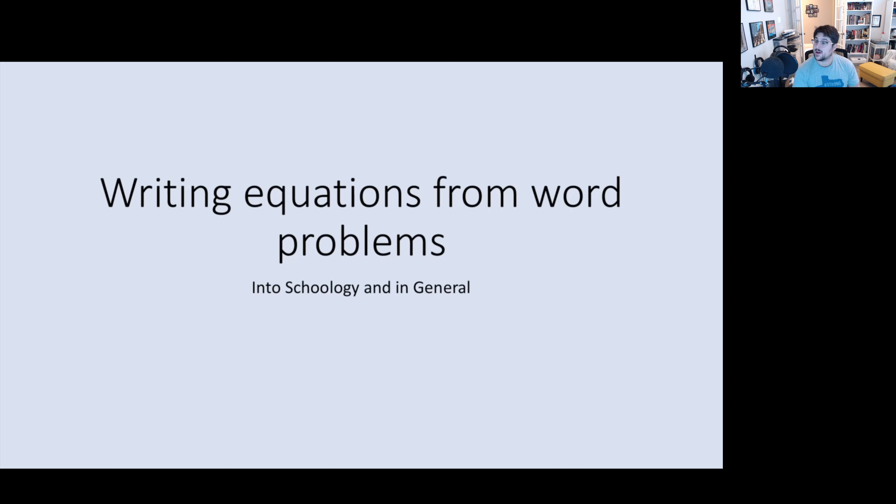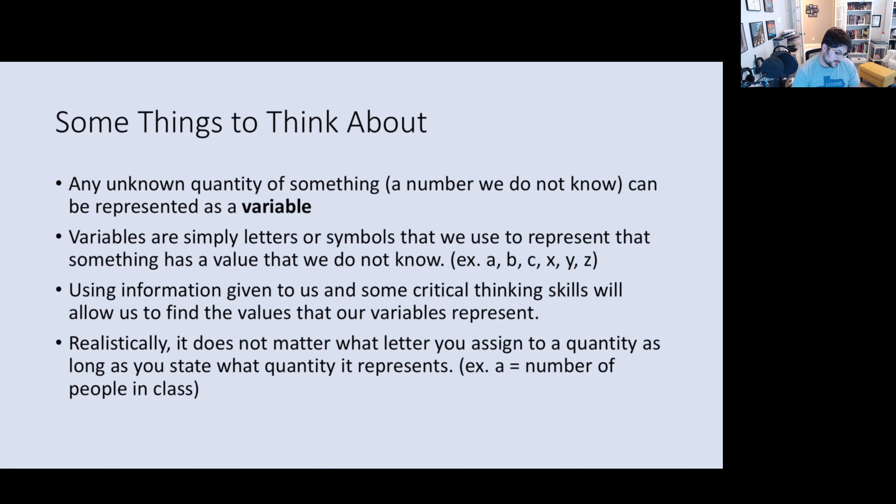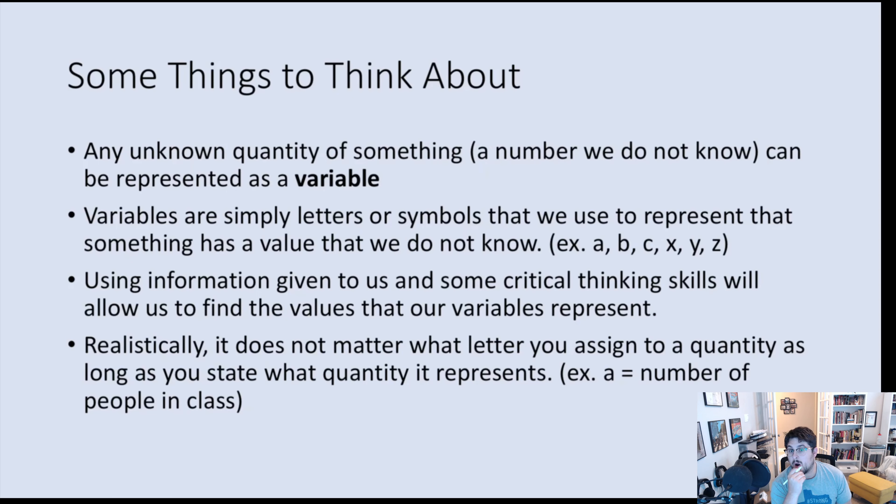Let's go ahead and start talking about writing equations for word problems. Some things to think about here are that any unknown thing, basically if we don't know something, we probably want to represent that as a variable. And again, variables are just letters or symbols that represent something we don't know. So we want to use the information that we have and try to be as smart as we can to find what values these things represent.